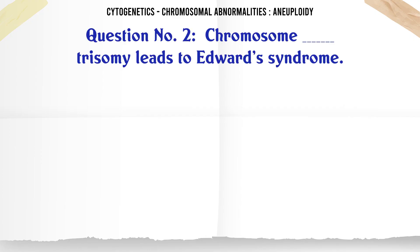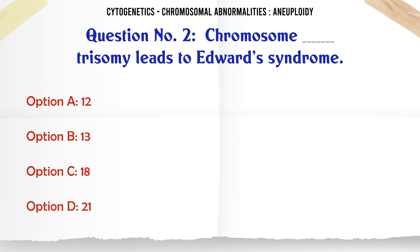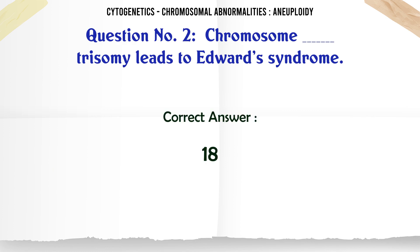Chromosome trisomy leads to Edwards syndrome: a. 12, b. 13, c. 18, d. 21. The correct answer is 18.